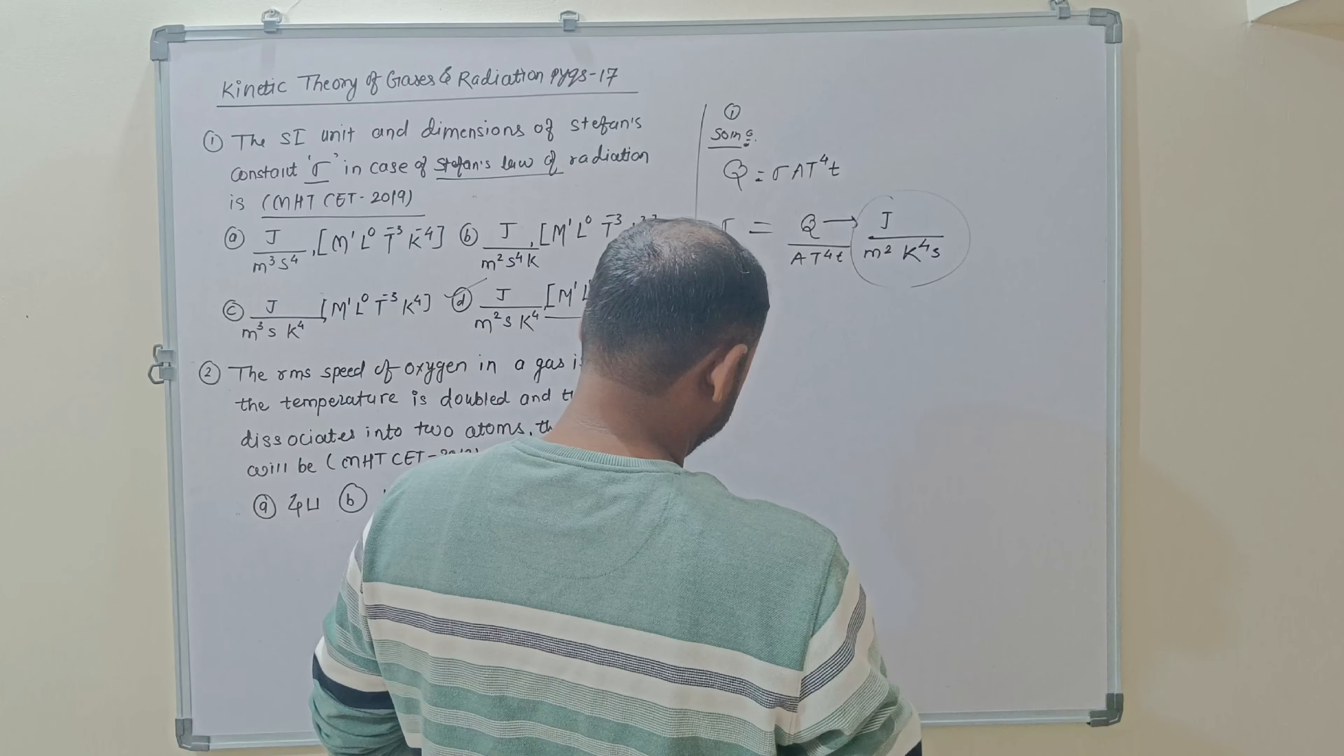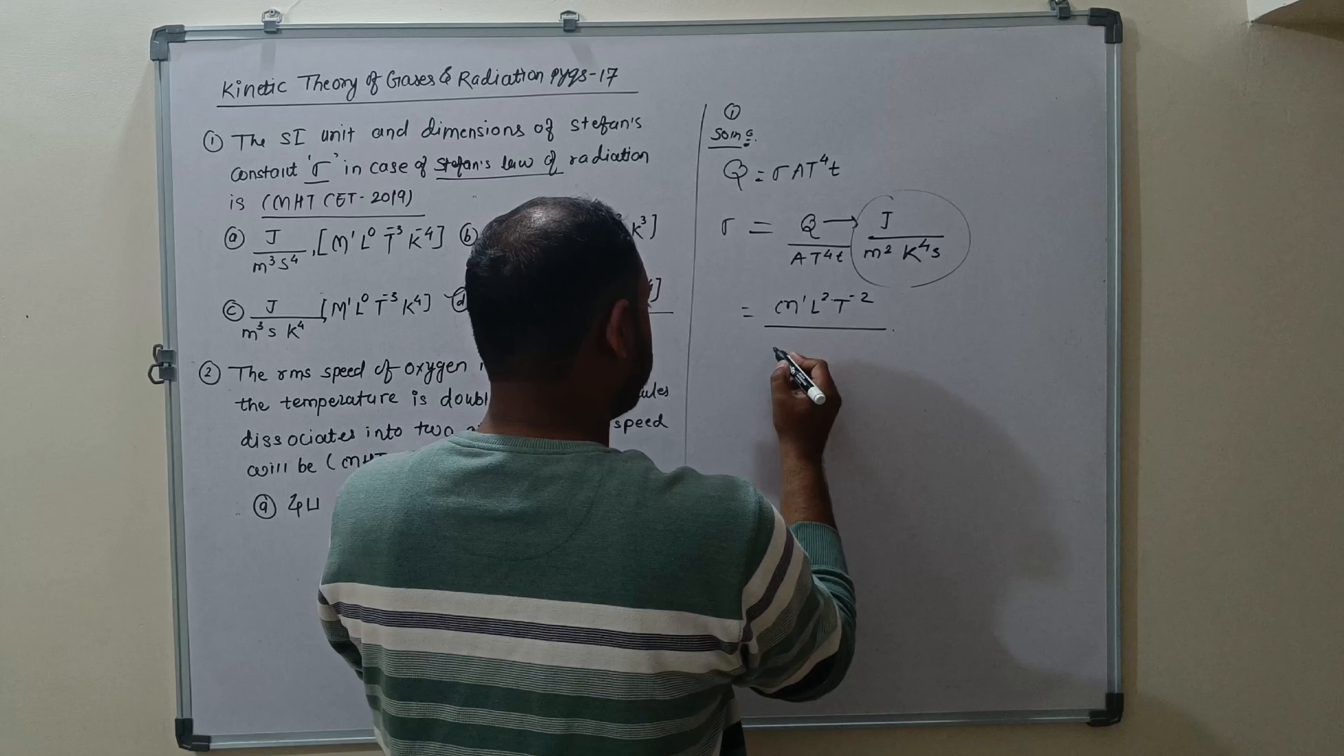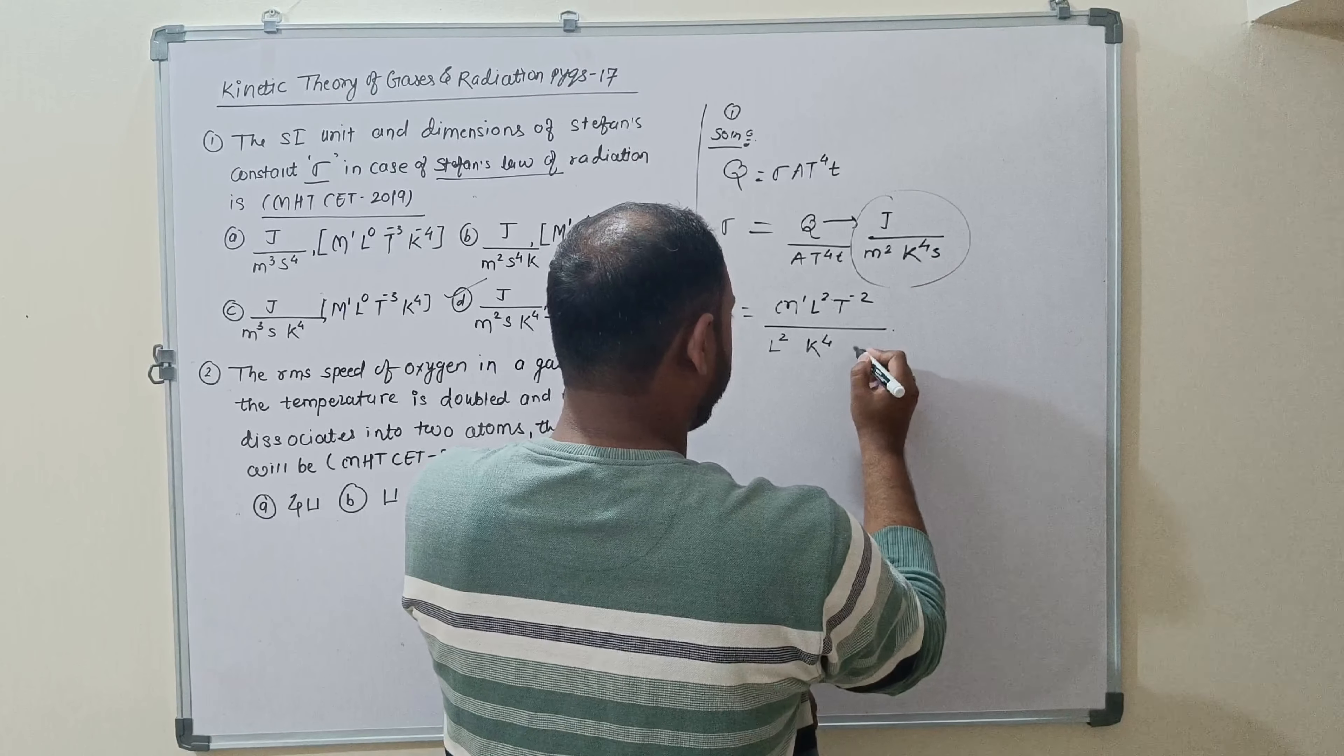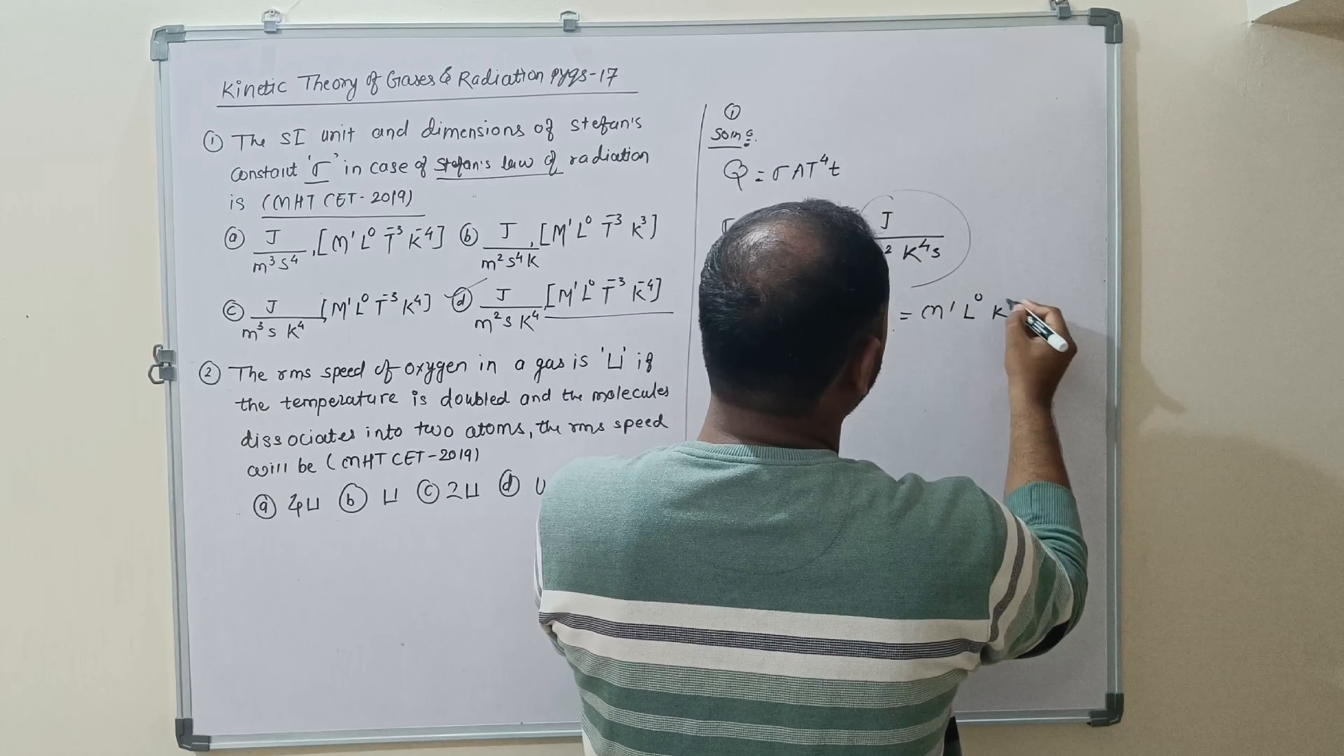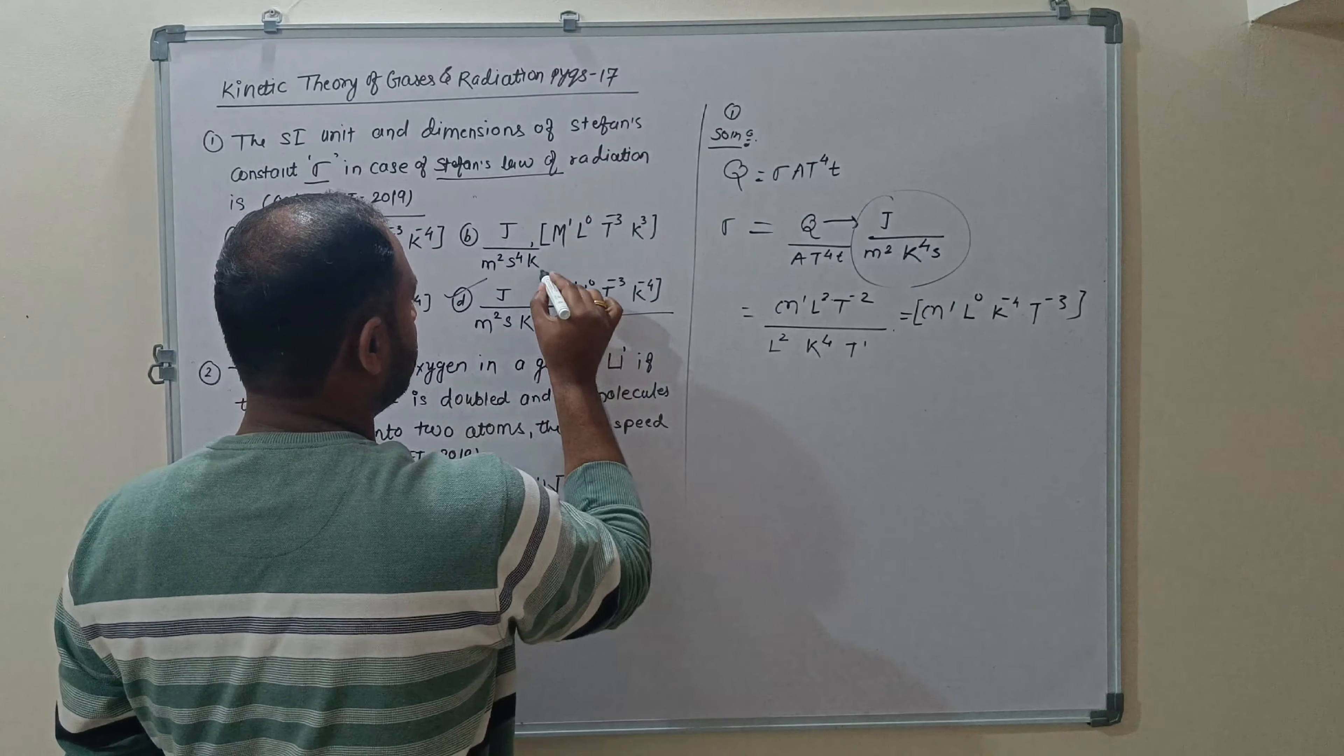This way, we will find out the dimension. Energy dimension: M1 L2 T power minus 2. Area: length L square. K temperature, S time T power 1. K power 4, K power minus 4 plus 1 is minus 1, T power minus 3. M1 L0 K power minus 4 T minus 3.